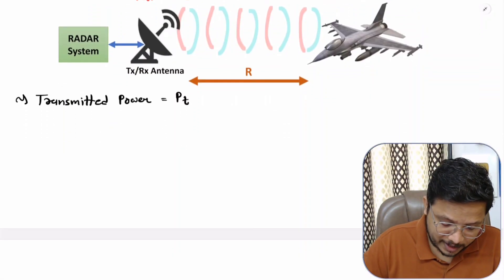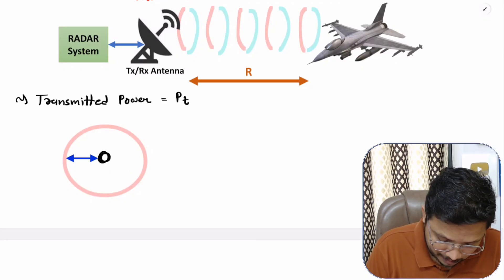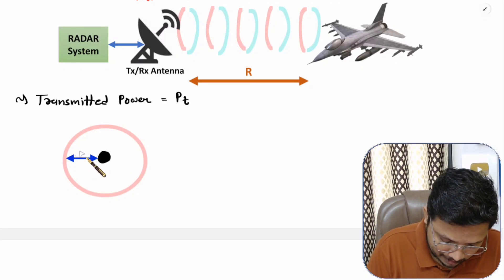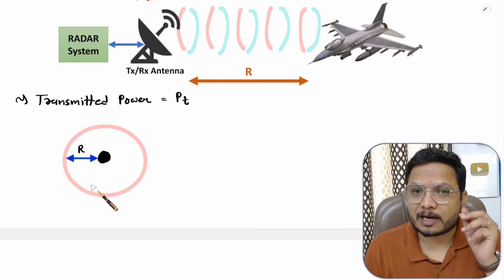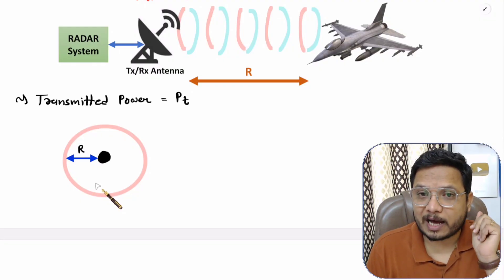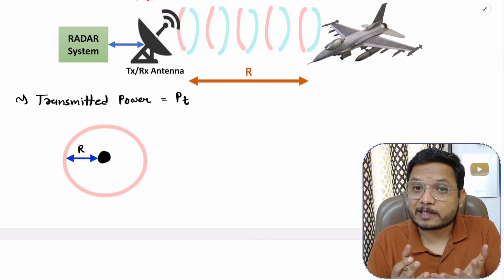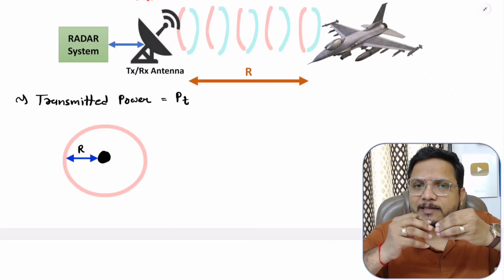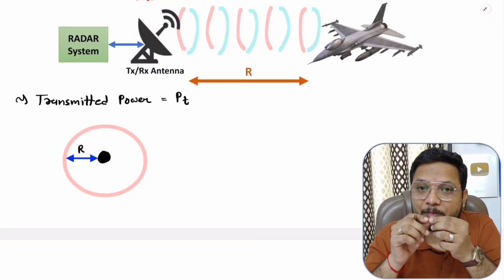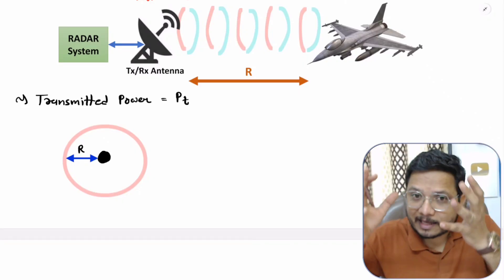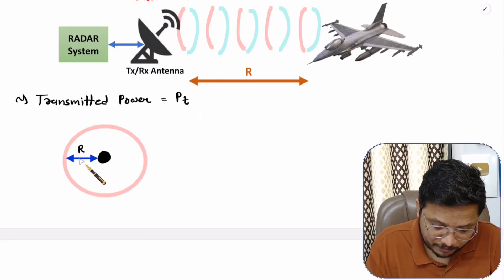Let us assume we have an isotropic source at the center. At distance r, the power density will be the transmitted power divided by 4πr², because the area of a sphere at distance r is 4πr². An isotropic source radiates equally in all directions. So power density for an isotropic source is Pt divided by 4πr².